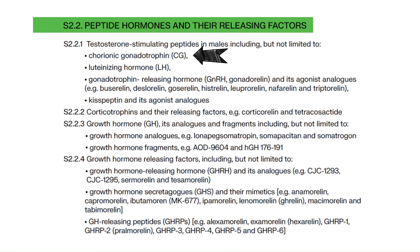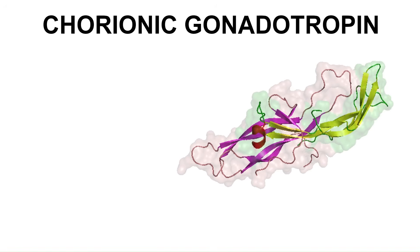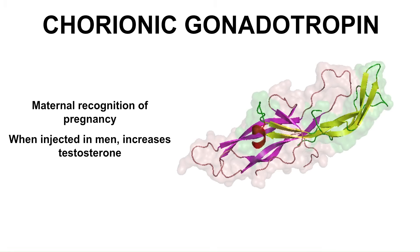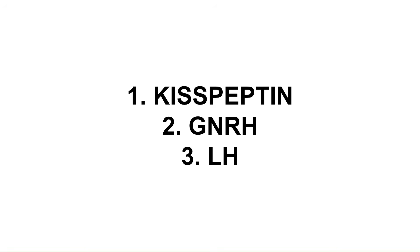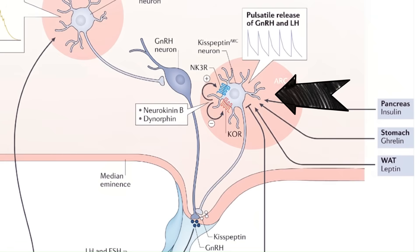Those GnRH pulses are controlled by kisspeptin, which stimulates the pituitary gland to produce luteinizing hormone, or LH. LH travels through the blood to the testicles and stimulates the Leydig cells in the testes to produce testosterone. The banned substances in this category are chorionic gonadotropin, luteinizing hormone, gonadotropin releasing hormone, and kisspeptin. Chorionic gonadotropin acts a little like LH and helps with testosterone production when injected in men.